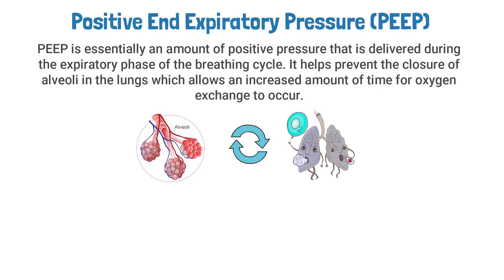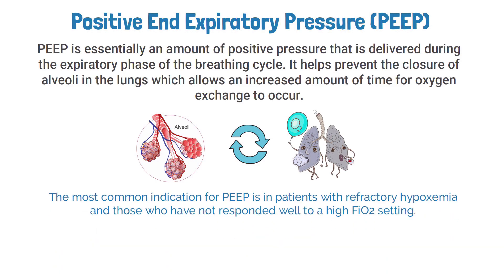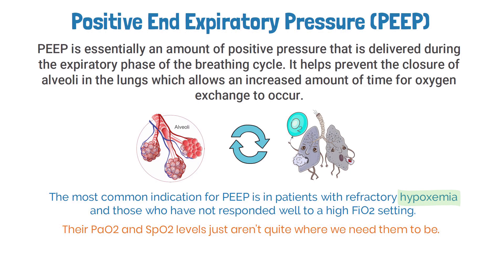The most common indication for PEEP is in patients with refractory hypoxemia — those who have not responded well to a high FiO2 setting. So let's say you have a patient who is struggling with hypoxemia; their PaO2 and SpO2 levels just aren't quite where we need them to be.